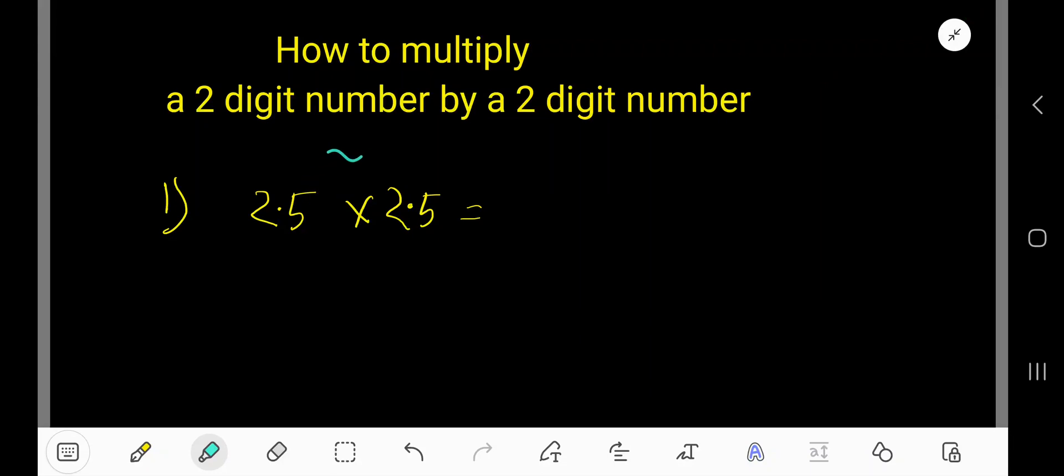This video is about 2 digit by 2 digit multiplication with decimal numbers. Here I have taken a specific example: 2.5, which is a 2 digit number with a decimal, and we have to multiply 2.5 by another 2 digit number, 2.5. So how to do that? First, forget about the decimal or ignore the decimal. We'll work on the decimal later. Just multiply as usual.